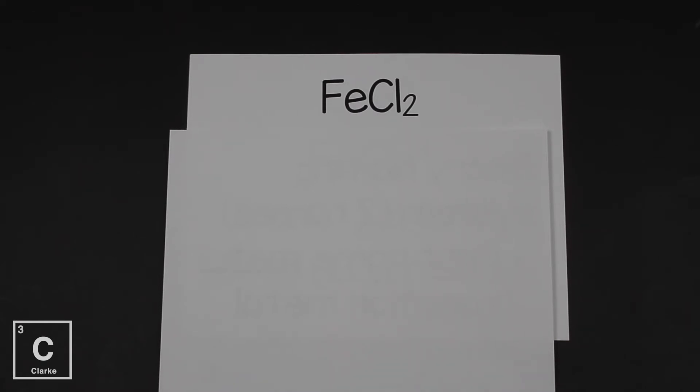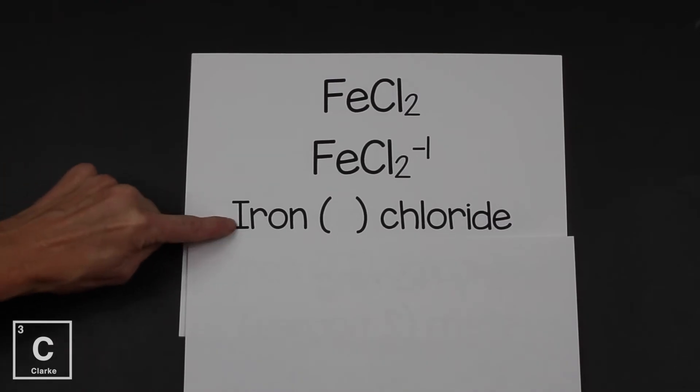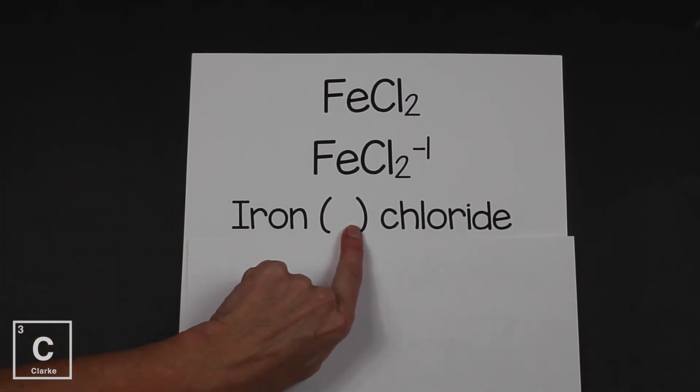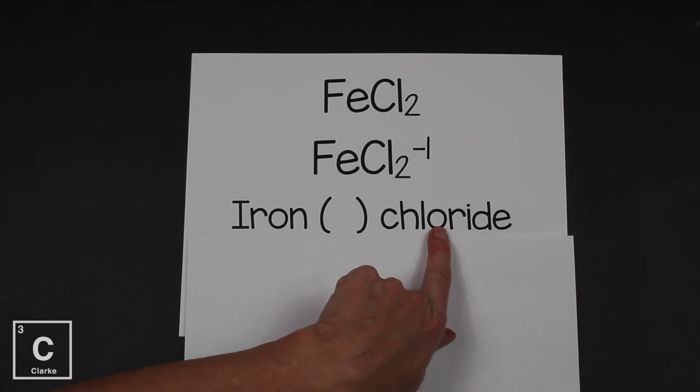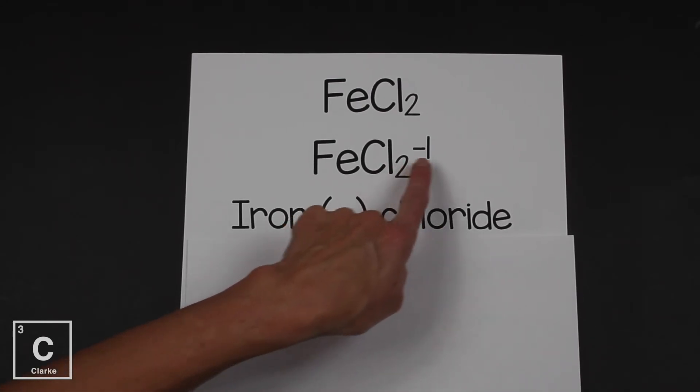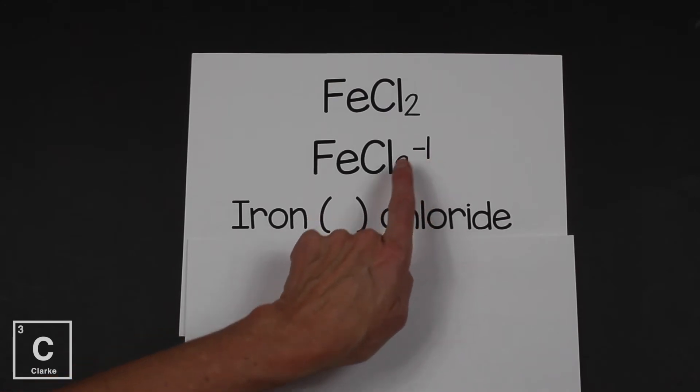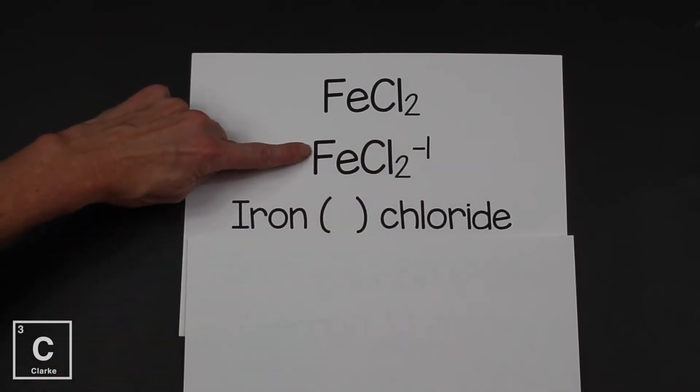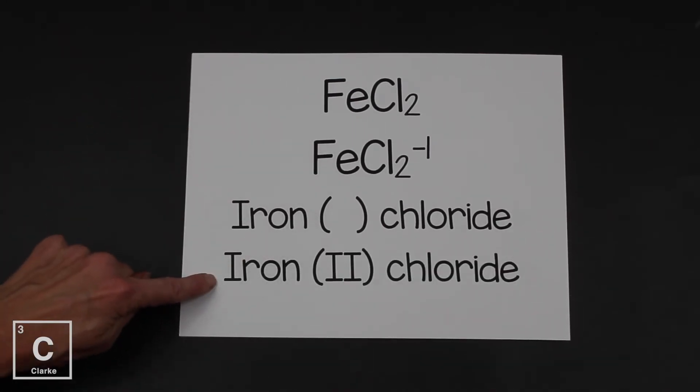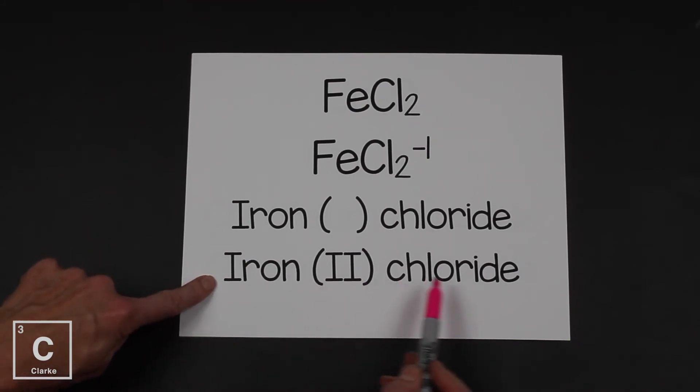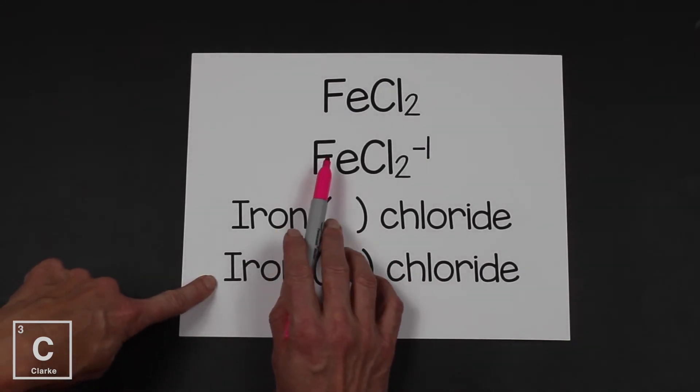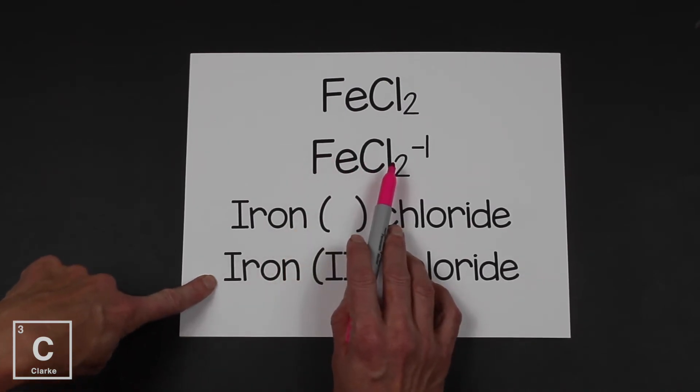Chlorine is in group 17. It's a halogen. So it is a negative one. But we have two of them. So at this point, we know we have iron. We're going to need a Roman numeral to define iron's oxidation number. And we know that chlorine is going to be chloride. Well, there's two chlorines and each chlorine is a negative one. So basically, chlorine is worth a negative two. We only have one iron. Iron must cancel that out. So iron must be a plus two. So that means iron, Roman numeral two, chloride. Because if iron is a plus two, that is going to cancel out two negative ones.